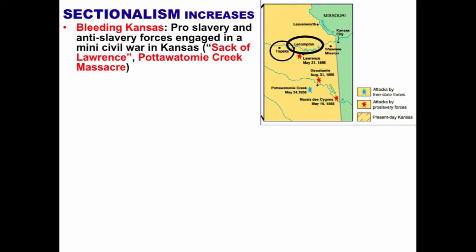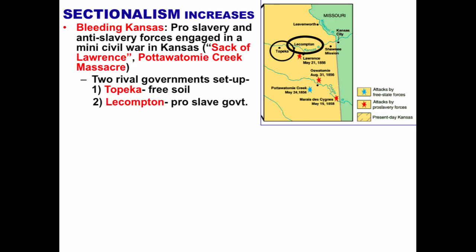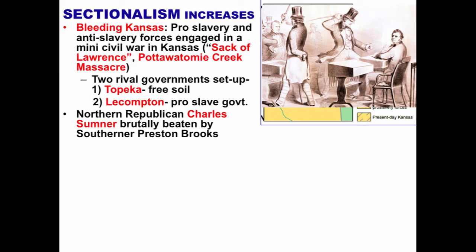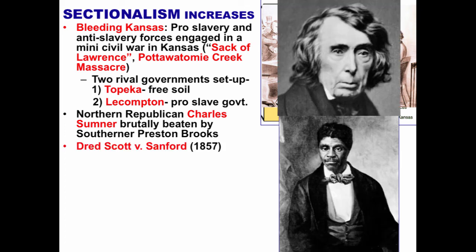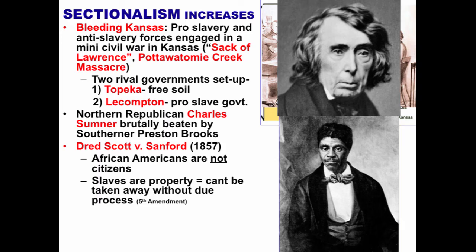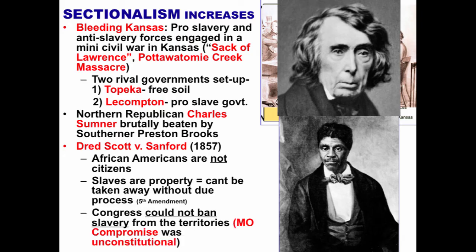Things went from bad to worse after the Kansas-Nebraska Act — sectionalism was just increasing. The events of Bleeding Kansas saw pro-slavery and anti-slavery forces engage in a mini-civil war in Kansas: the Sack of Lawrence, the Pottawatomie Creek Massacre, and two rival governments set up — the Topeka free soil government and the Lecompton pro-slavery government. Popular sovereignty was not working out well. Northern Republican Charles Sumner was brutally beaten by Southerner Preston Brooks. Then the Dred Scott v. Sanford case saw the Supreme Court rule that African Americans were not citizens, slaves were property and therefore could not be taken away without due process, and Congress could not ban slavery from the territories — effectively making the Missouri Compromise unconstitutional. The Dred Scott decision basically opened up the potential for slavery anywhere.